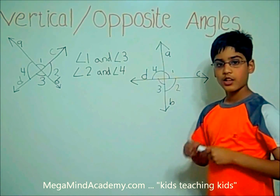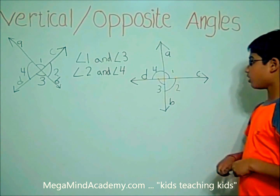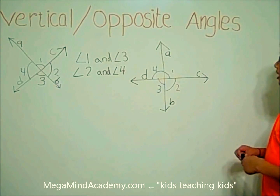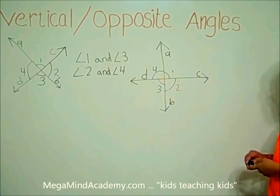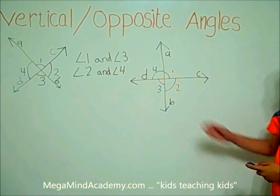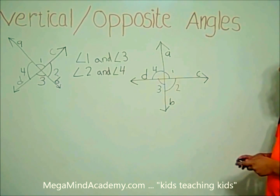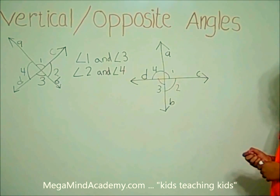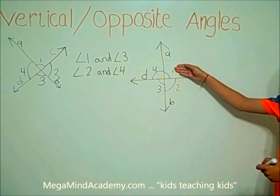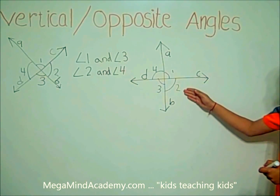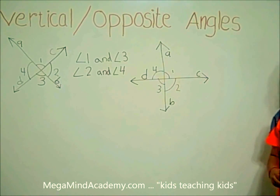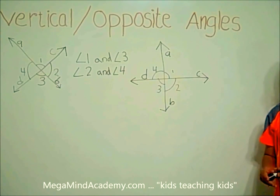Now let's find the vertical angles. You might think that angle 4 and angle 3 are vertical angles, but they are not vertical angles, because they are placed vertically — they are called adjacent angles. So angle 1 and angle 2 are also adjacent angles, and they are not vertical angles either.